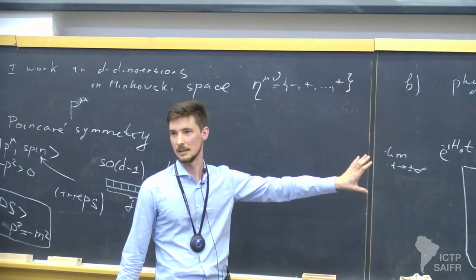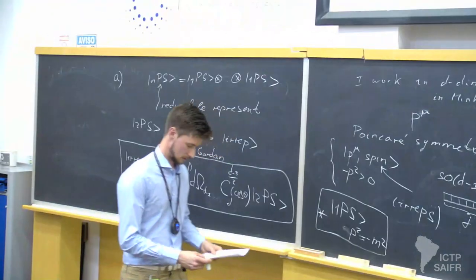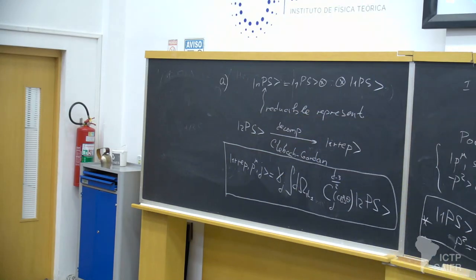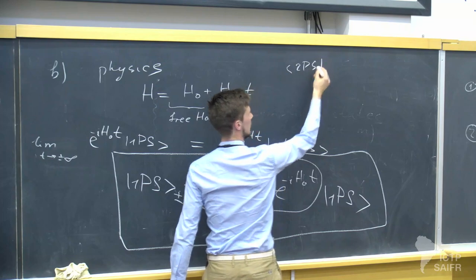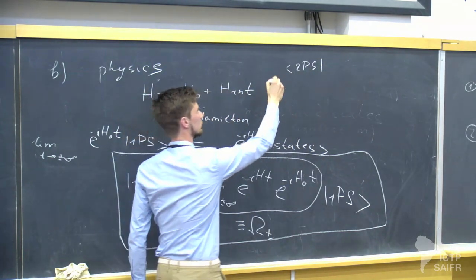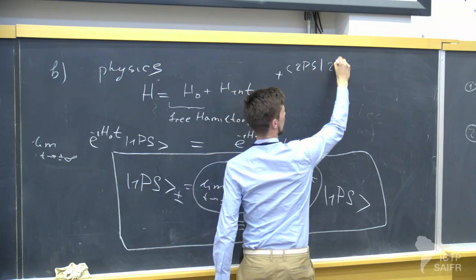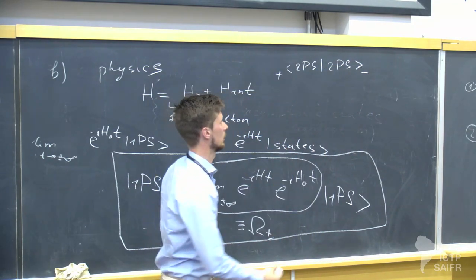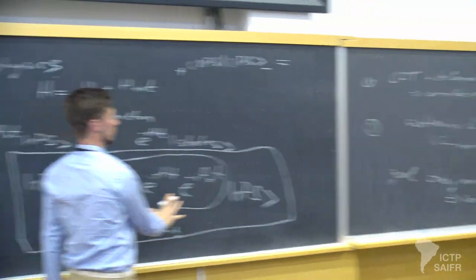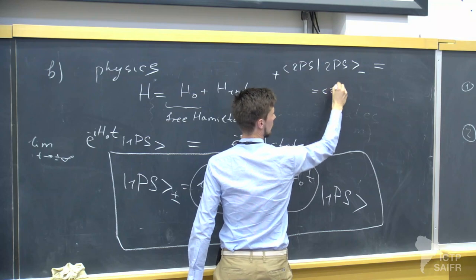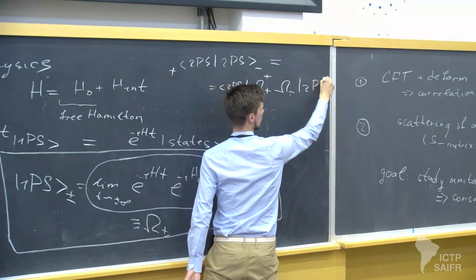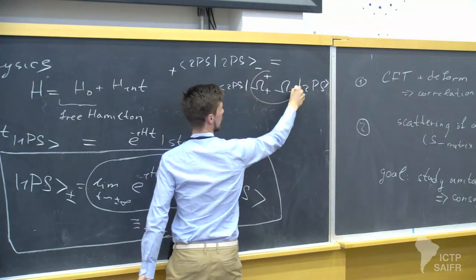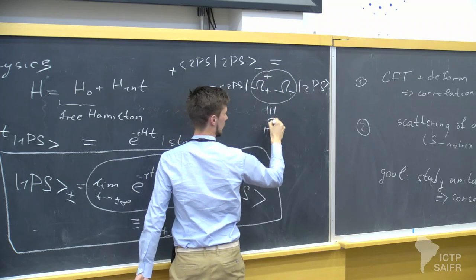Luckily I will not need these details — I need just some formal definition. To show what happens to these asymptotic states, we define a scattering amplitude: some two-particle asymptotic state in the far future. Using the definition of asymptotic states, I get a two-particle free state, Omega-plus dagger times Omega-minus acting on a two-particle state, and the product of this Møller operator combination is the scattering operator S.